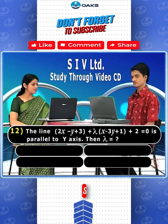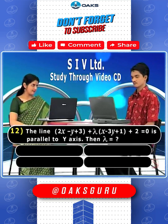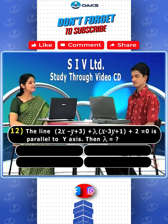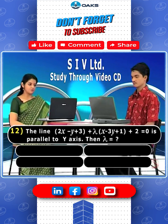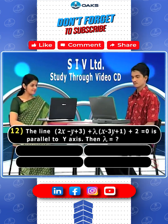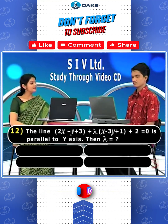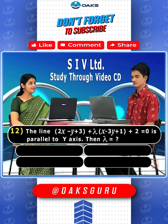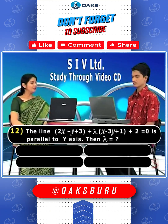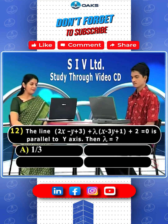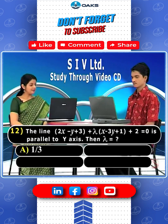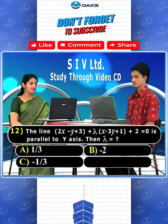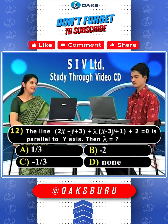The line 2x minus y plus 3 plus lambda of x minus 3y plus 1 plus 2 equals 0 is parallel to the y-axis. Then lambda is equal to: option a) 1 by 3, b) minus 2, c) minus 1 by 3, and d) none.